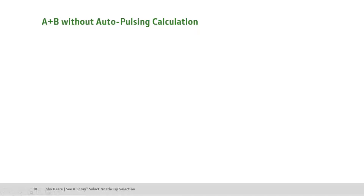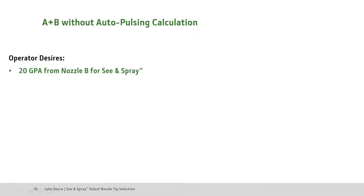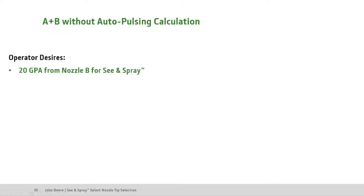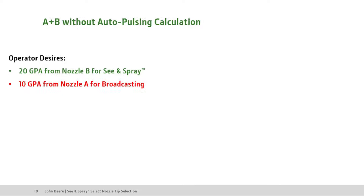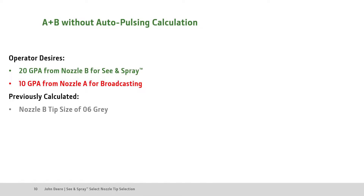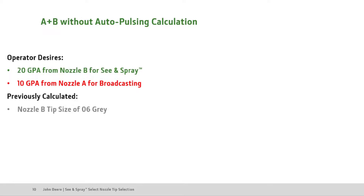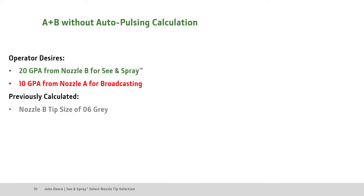Let's walk through an example where the operator wants to spray with A plus B without auto-pulsing, where Nozzle B See & Sprays and Nozzle A broadcasts with auto-pulsing turned off. The operator wants to spray at a desired See & Spray rate of 20 gallons per acre out of Nozzle B and a desired traditional broadcast rate of 10 gallons per acre out of Nozzle A. We will also use our previously calculated 06 gray Nozzle B tip size since the See & Spray rate is the same from our last example.